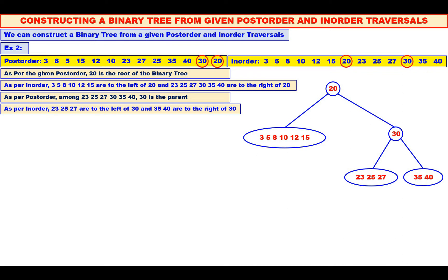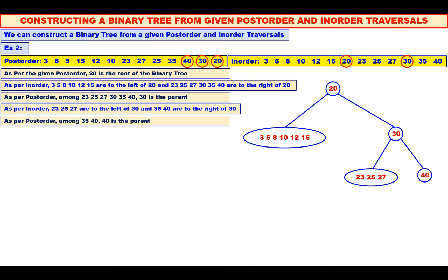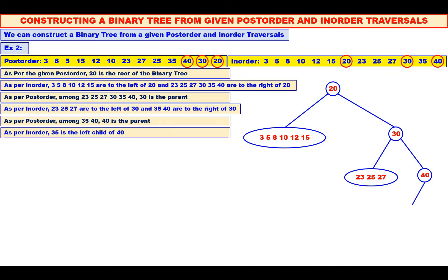Now, among 35 and 40, which is the root? See the post-order — 40. Yes, 40 is the root. We will mark it in the inorder also. 35 is to the left of 40. Therefore, 35 is the left child of 40. It is marked in both inorder and post-order.